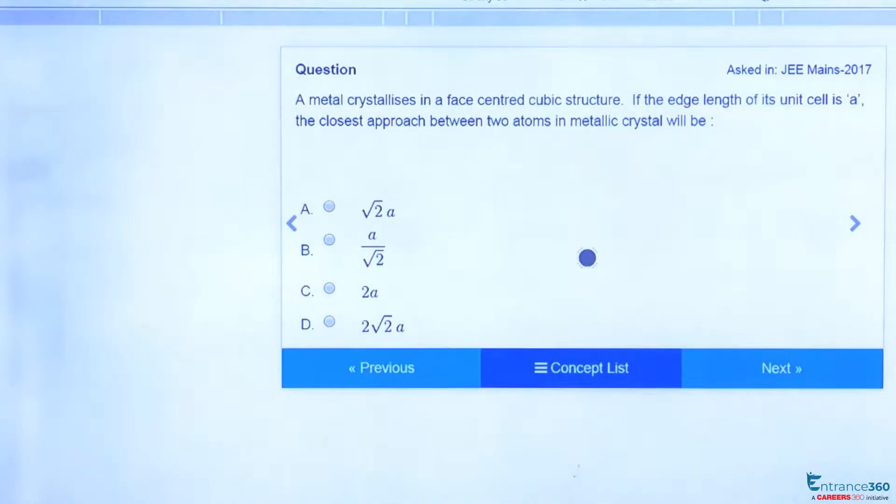Hello students, today we will discuss a question from JEE Main 2017, from the chapter States of Matter. The question says a metal crystallizes in a face-centered cubic structure, and we have given its edge length 'a'. We have to find what is the closest distance between two atoms in this structure.